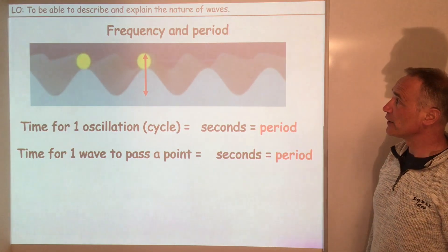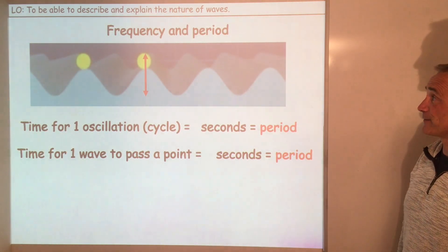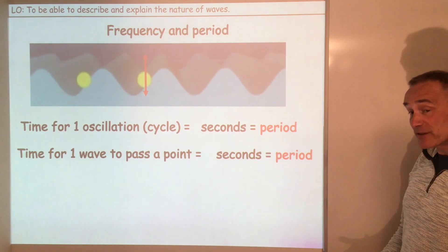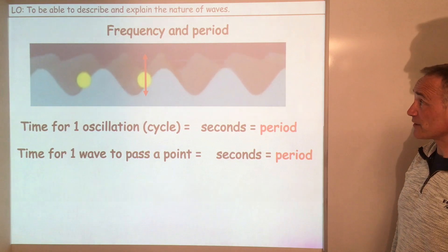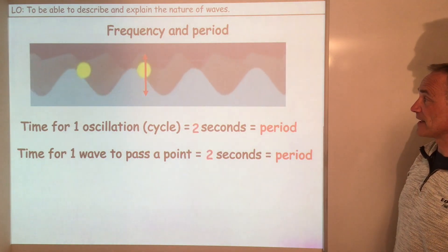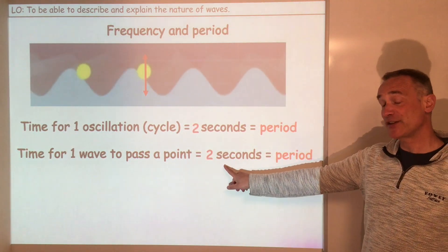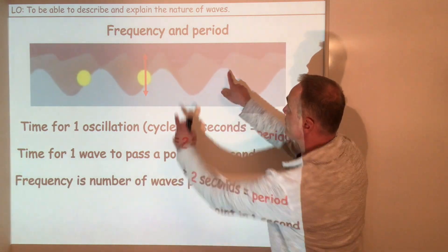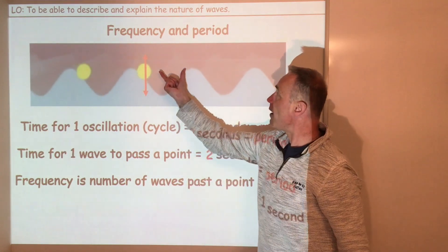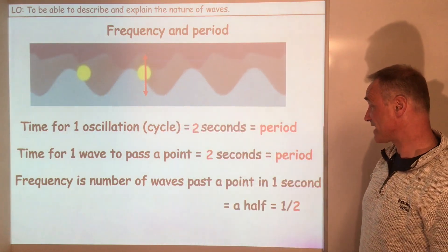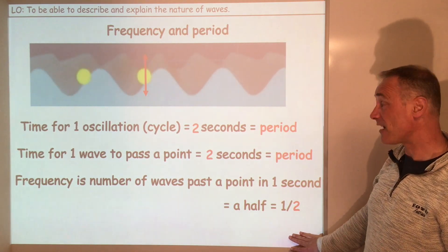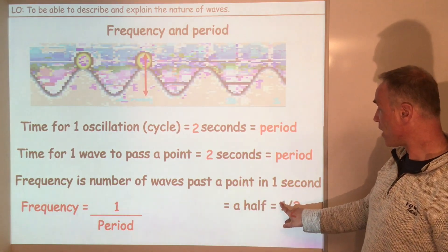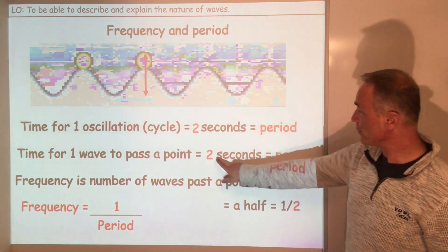Let's look at a different one now. I've halved the wavelength, so I should have doubled the frequency. Look how much faster that oscillation is going. I measured it at two seconds. If it takes two seconds for one wave to go past, then only half a wave passes that point in a second — so actually the frequency is a half. And notice again, we can work out frequency because that's one over the period, which was two.